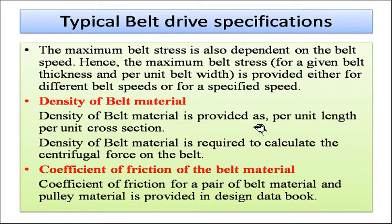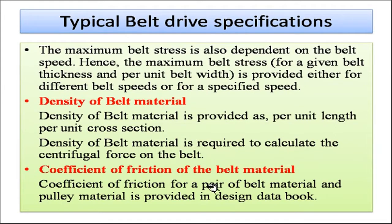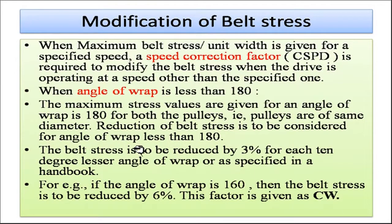Maximum belt stress for a given belt thickness and per unit belt width is provided either for different belt speeds or for a specific speed. Another specification is the density of the belt material, which is required for calculating the centrifugal force acting over the belt and is generally provided as per unit length per unit cross-section. Another important specification is the coefficient of friction between the belt material and the pulley material, and different combinations are found in the data book.